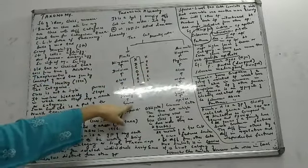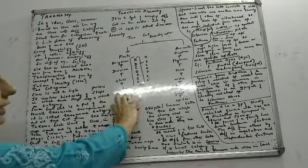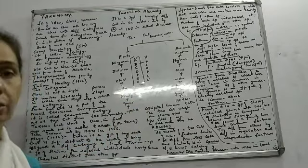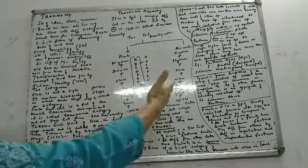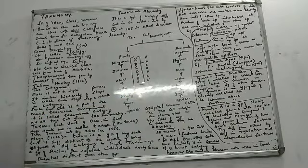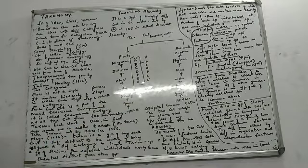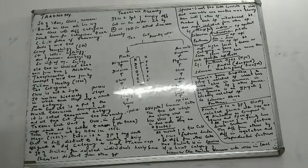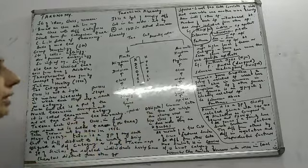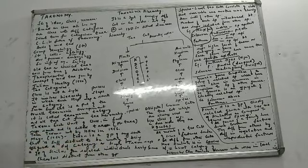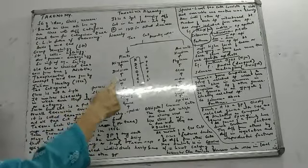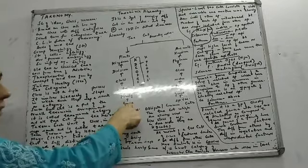Genus comprises a group of related species which have more similarities to each other compared to other species. Solanum tuberosum and Solanum melongena are in the same genus because of certain similarities, but different species because they cannot interbreed. Similarly, Panthera leo, Panthera tigris, and Panthera pardus are in the same genus but different species.